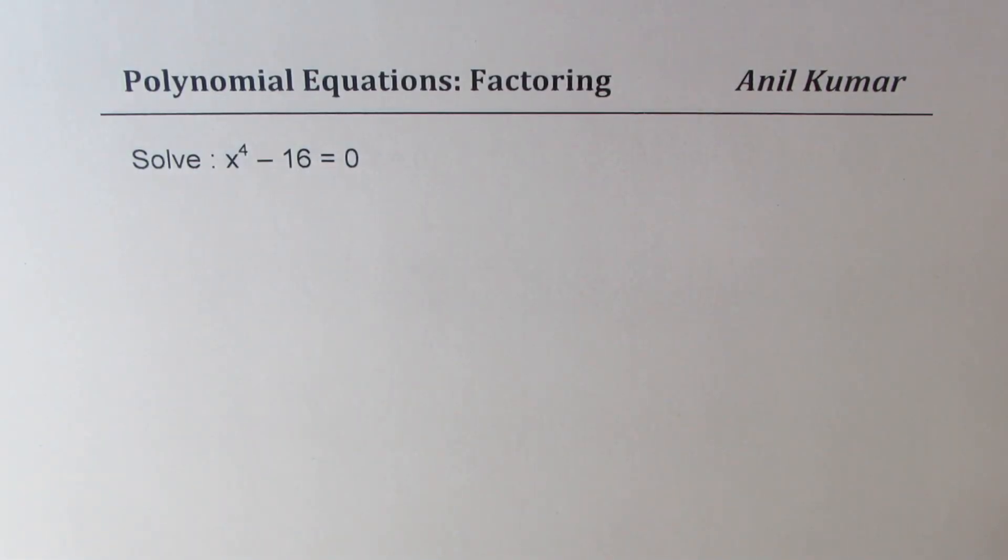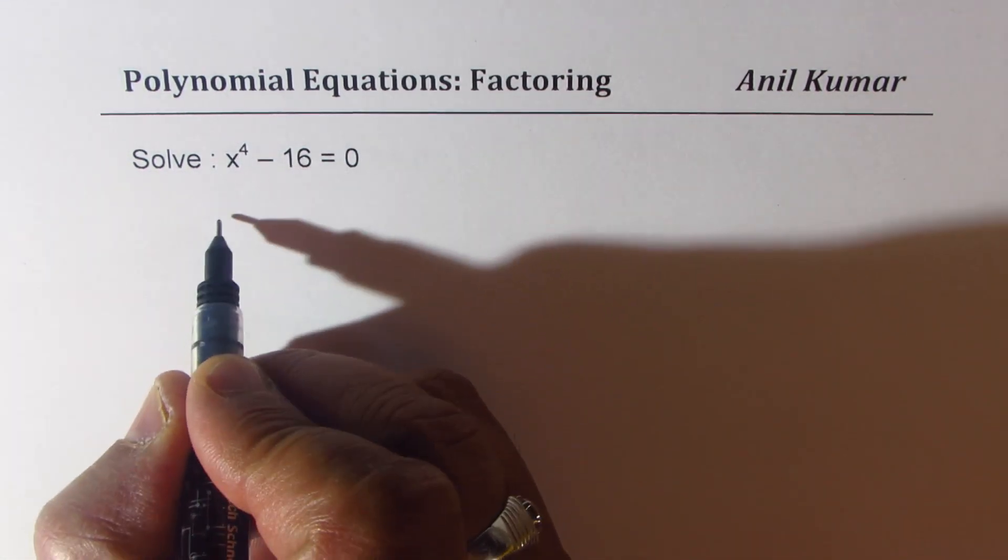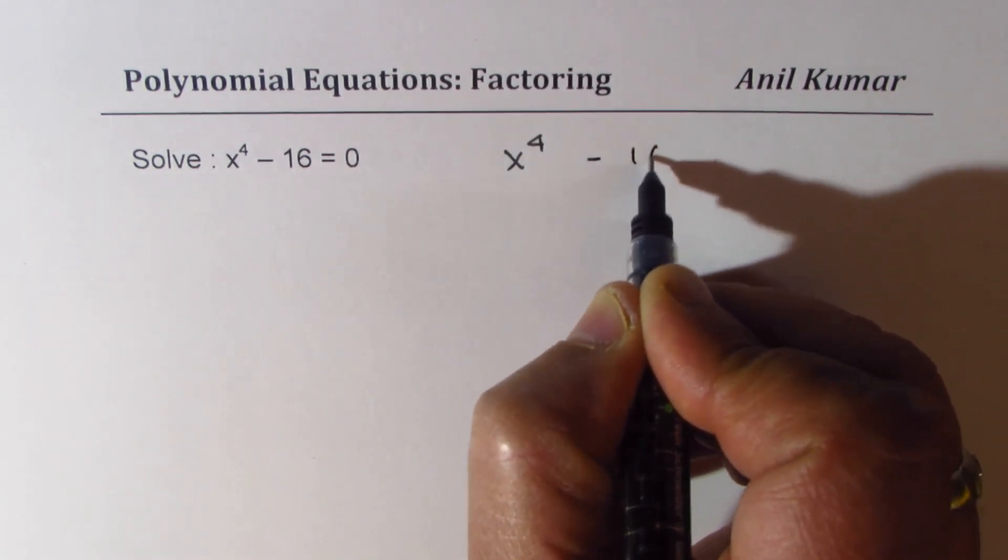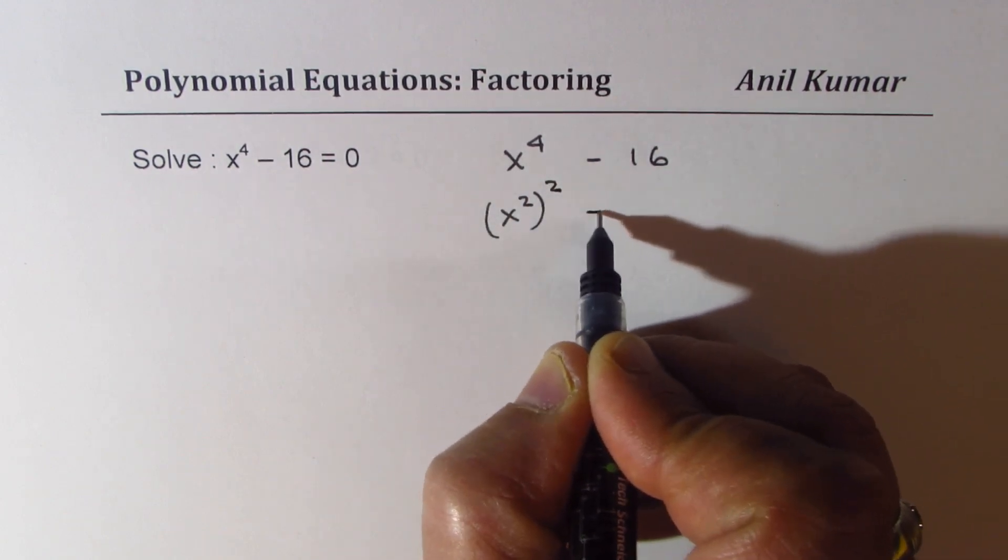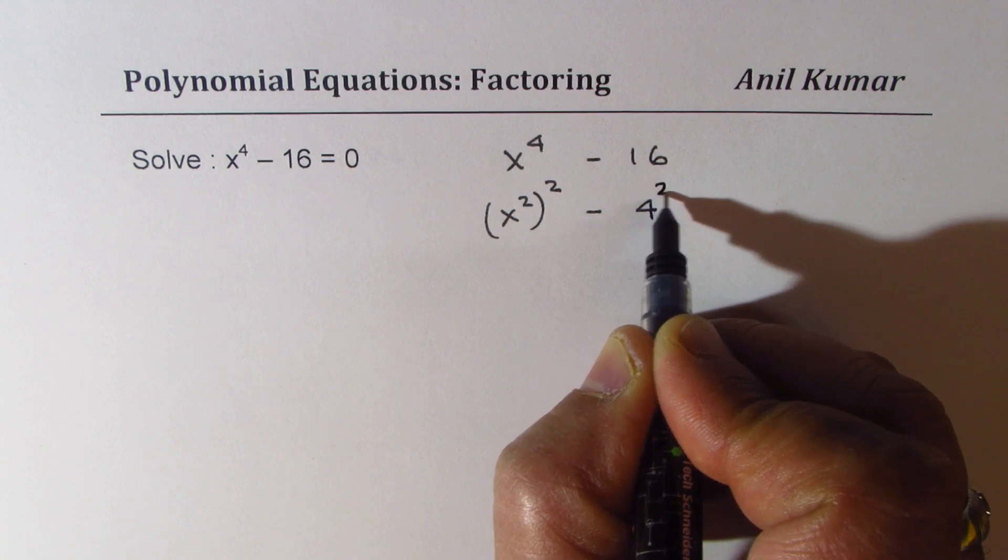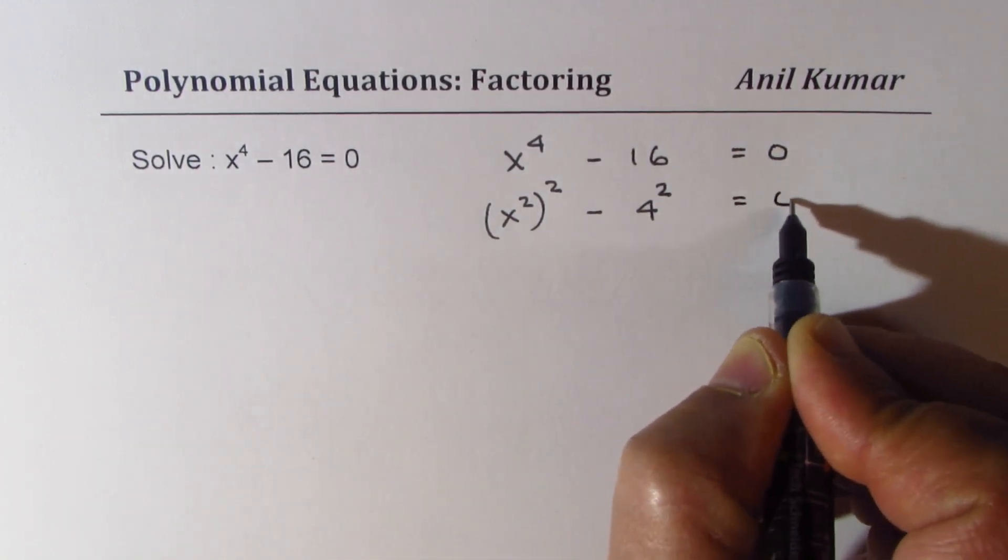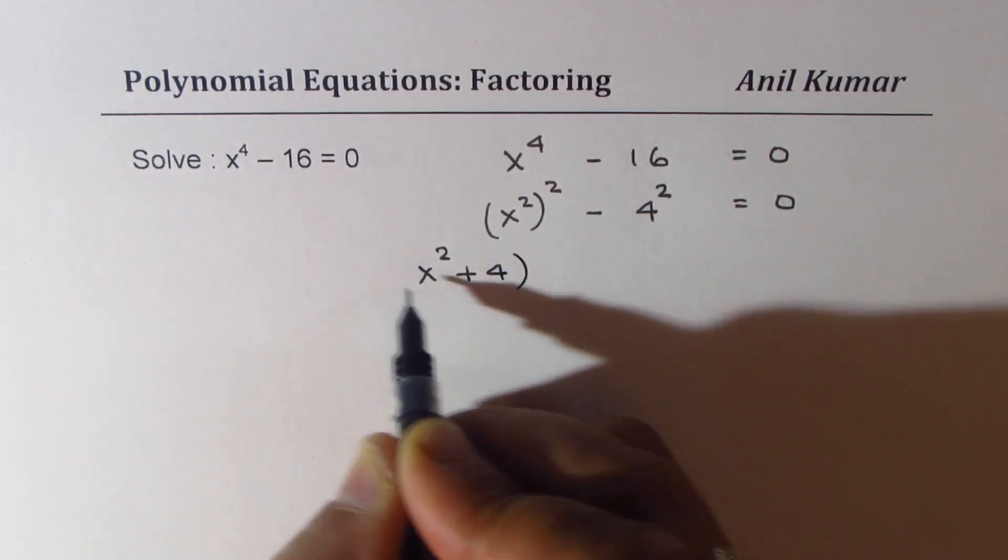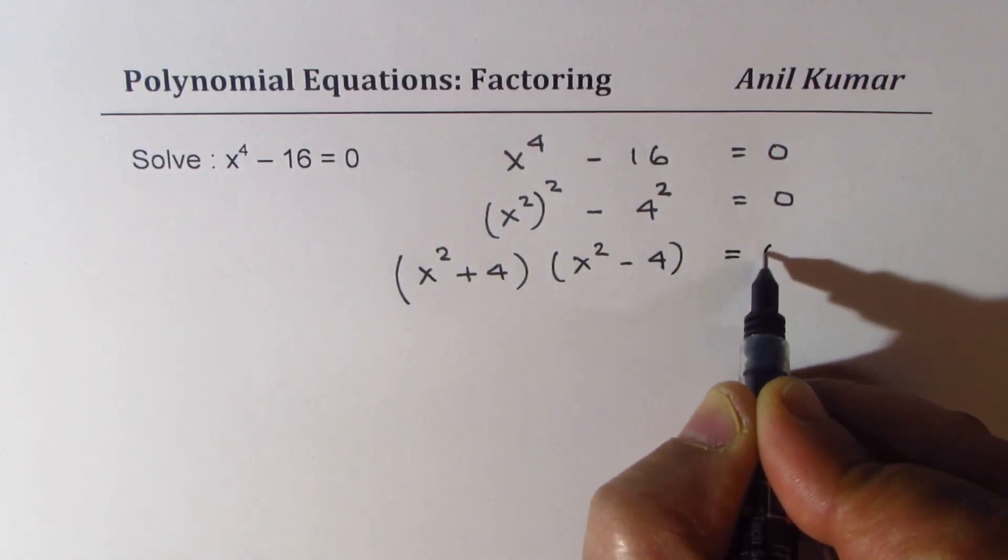Let's look into the third equation, which is difference of squares. We have x to the power of 4 minus 16. I will write this as x squared whole square minus 4 square. So now I could use difference of squares. What we get here is x squared plus 4 times x squared minus 4 equal to 0.